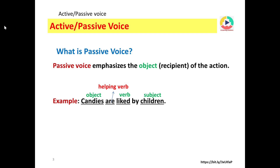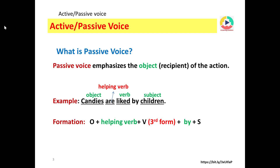In a passive voice sentence, we write the object first and the subject is written at the end. We also add a helping verb. The formation is: object + helping verb + verb in third form + by + subject. In a passive voice sentence, the verb is always written in third form after the helping verb.